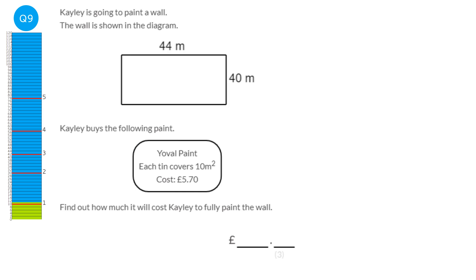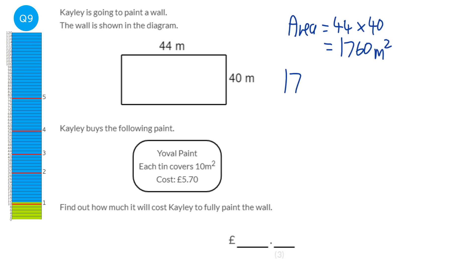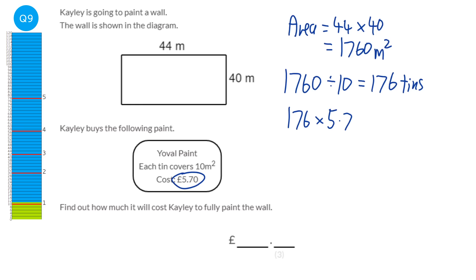To work out the area of the wall, multiply 44 by 40: that gives 1,760 square metres. Each tin covers 10 square metres, so we need 1,760 divided by 10, which is 176 tins. Each tin costs £5.70, so it's 176 times £5.70, giving a total price of £1,003.20.